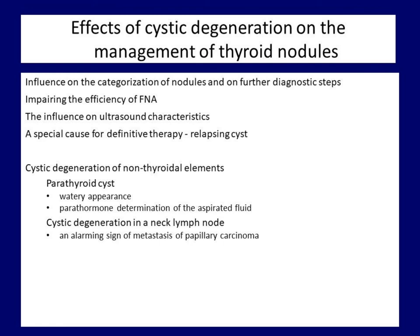The cystic degeneration of two non-thyroidal elements must be mentioned. Parathyroid cysts frequently appear as pure cysts; if we aspirate a watery content, it proves the parathyroid origin. The real anatomical location is frequently difficult to judge in large parathyroid cysts before aspiration. If we suspect parathyroid origin, we can indicate washout thyroglobulin and parathormone determination from the aspirated content. While cystic degeneration of a thyroid nodule decreases the risk of cancer, the situation is the opposite in lymph nodes — the presence of cystic fluid within a lymph node is an alarming sign of metastasis of papillary cancer.